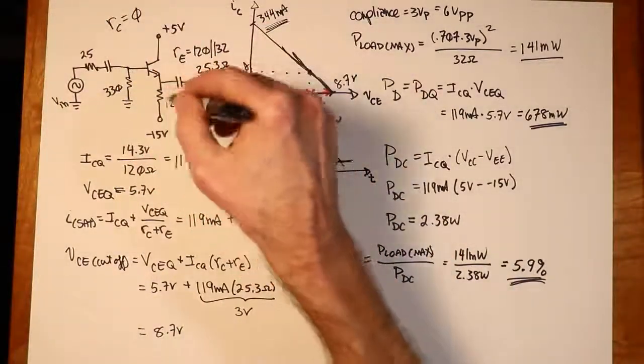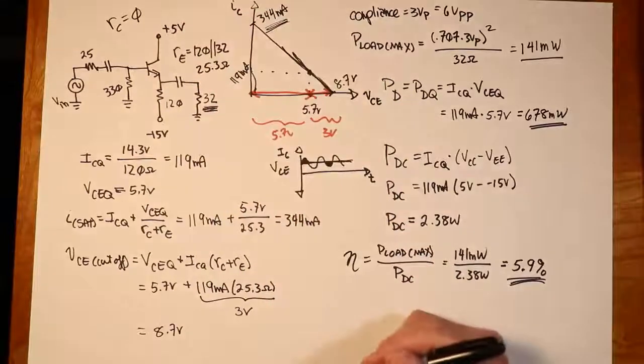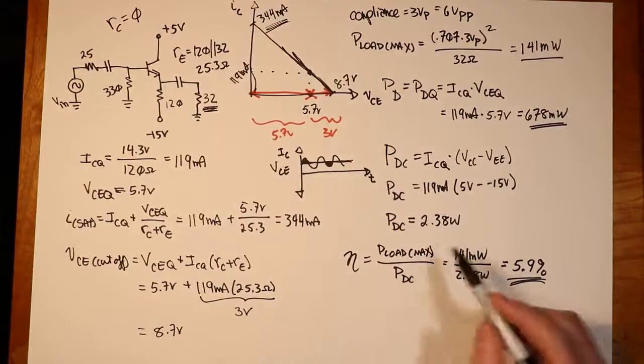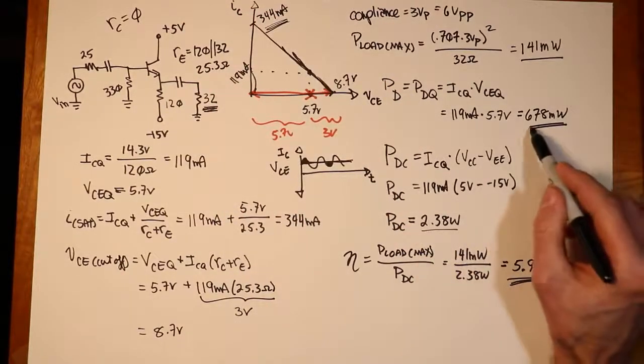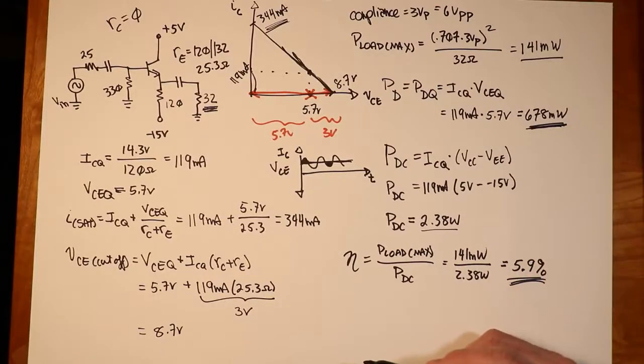So basically, 94% just burns up inside the various devices. The 330, the 120, more so, the transistor itself. Out of this 2.38 watts, there's a sizable chunk of it right there in the transistor. So not too efficient.